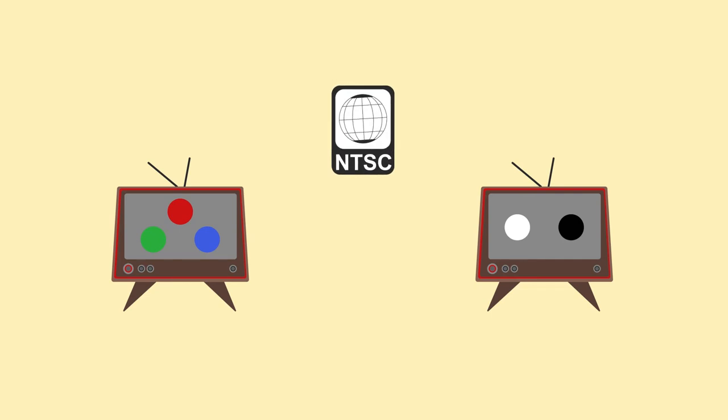When color was brought into the industry in the 50s, the NTSC mandated that it must be compatible with everyone's black and white set. So the three signals of info that created a color picture had to be composited into one signal. Thus, composite was born.